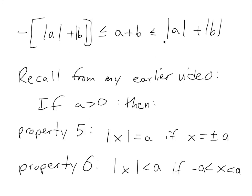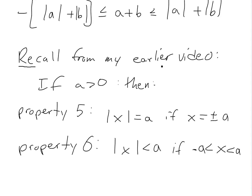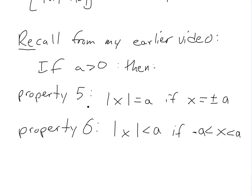Before finishing the proof, we need to recall two properties of absolute values from earlier. Property five states: the absolute value of X equals A if and only if X equals plus or minus A. Property six states: the absolute value of X is less than A if and only if X is strictly between negative A and A.